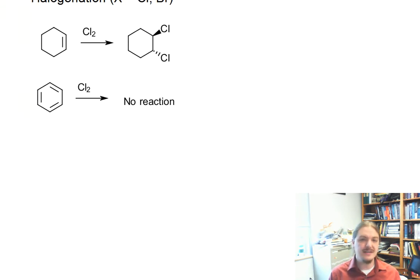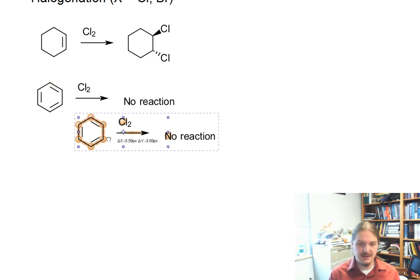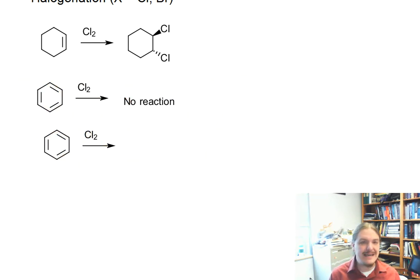However, it isn't to say that benzene doesn't react with halogens under the right conditions. If a Lewis acid catalyst, like iron trichloride or aluminum trichloride, is added to the reaction,